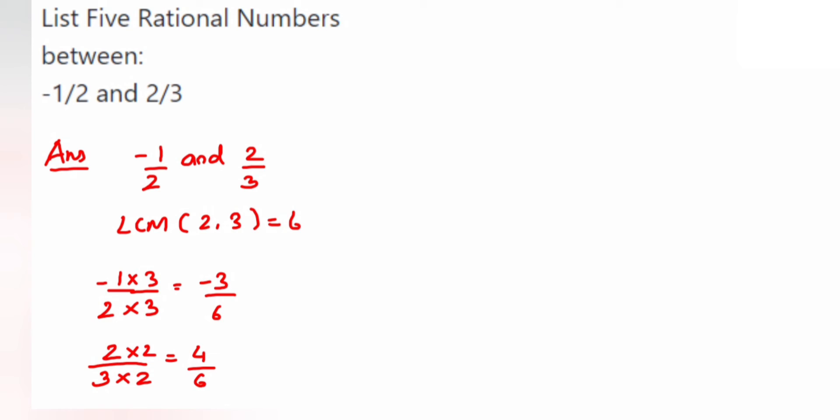With the denominators the same, we can look at the numerators: -3 and 4. Between -3 and 4, there are many rational numbers. We just need to write any 5 of them.